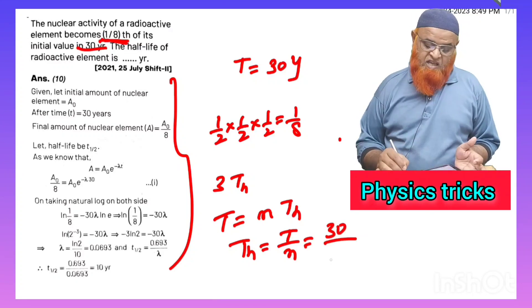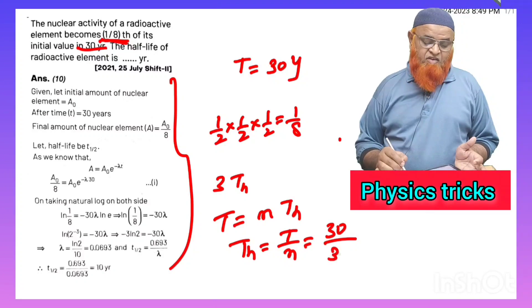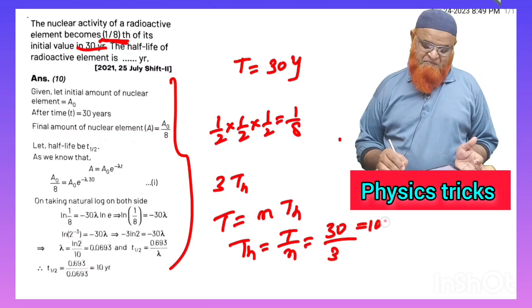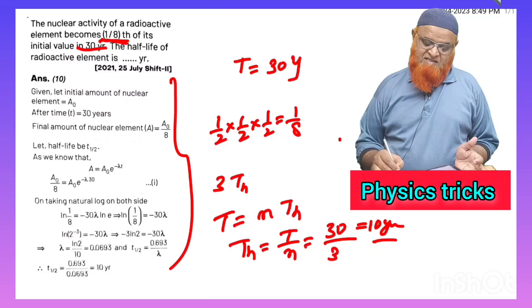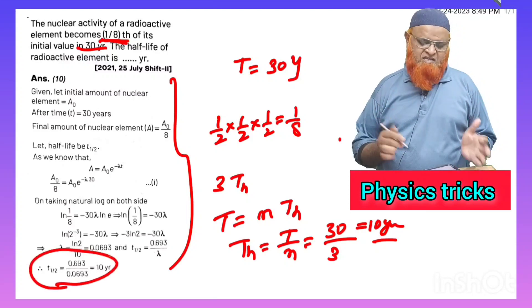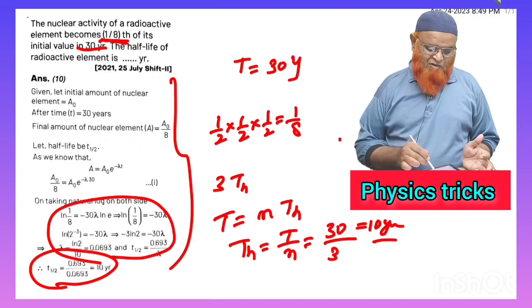Total time here is given as 30 years, and number of half-lives, how many are there? Three. That means your answer is 10 years. That's it, so simple it is. Why do all these complex calculations?